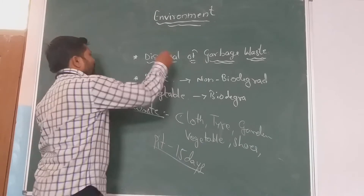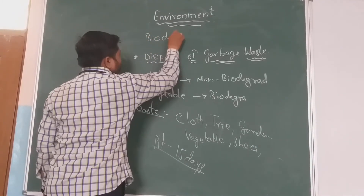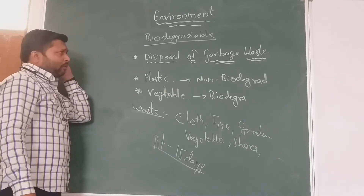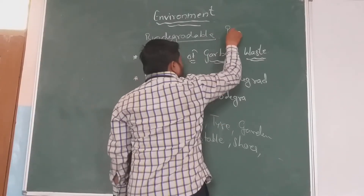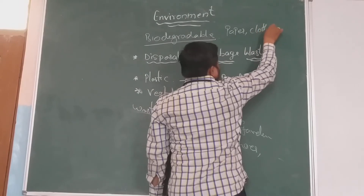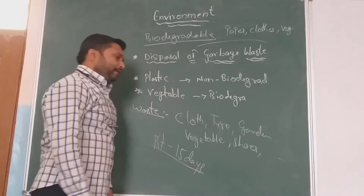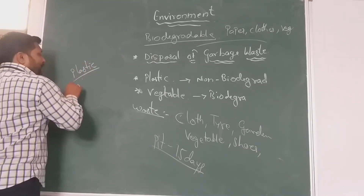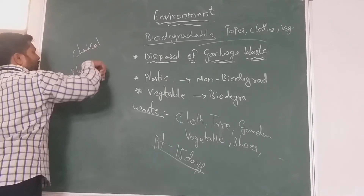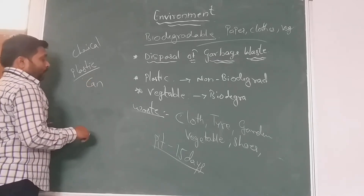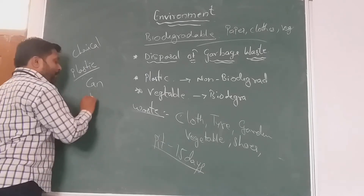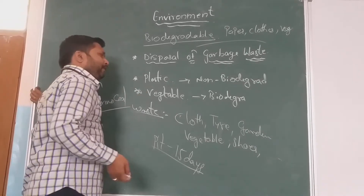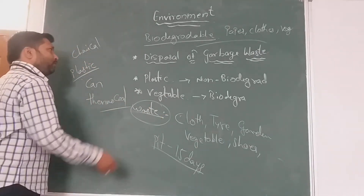You have already learned about biodegradable and non-biodegradable. Biodegradable things are those which are going to be decomposed into the earth's crust by bacterial activity. Certain vegetables, certain cloths, and vegetable waste are all biodegradable. In addition to this, there are a lot of non-biodegradable substances also, like plastic, the chemicals which we are using or spraying in our rooms, metal cans, and thermal coal which we are using. So these are all non-biodegradable. You can identify which are decomposed and which are not decomposed.